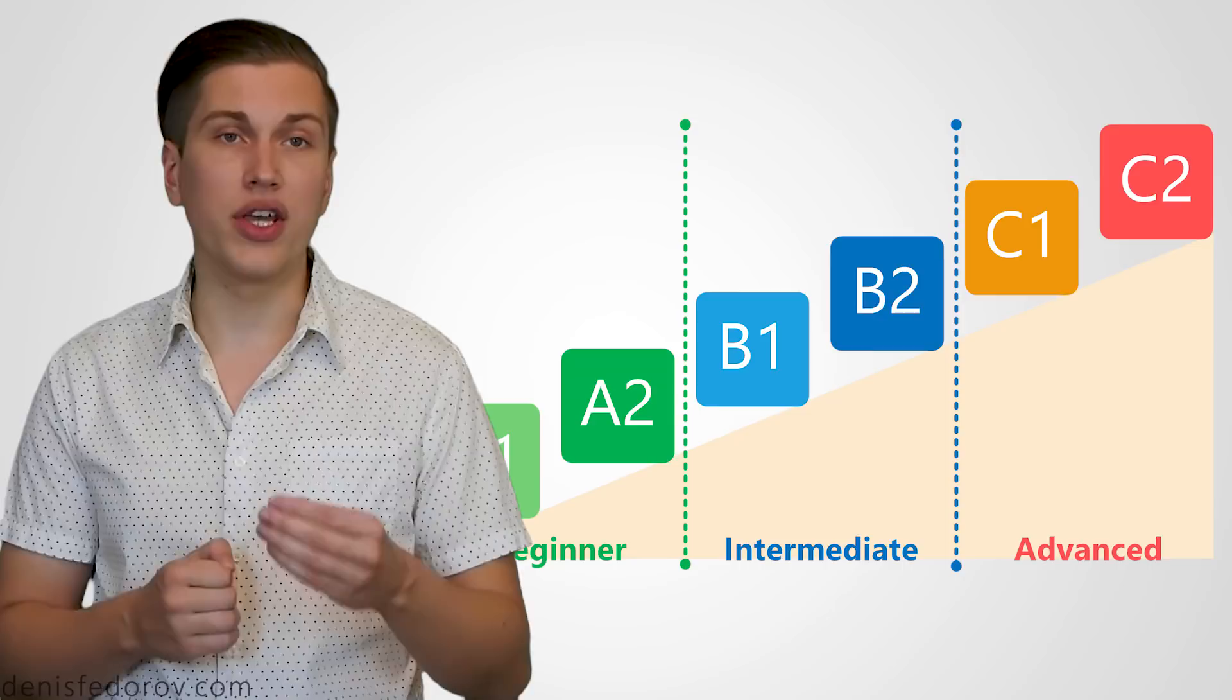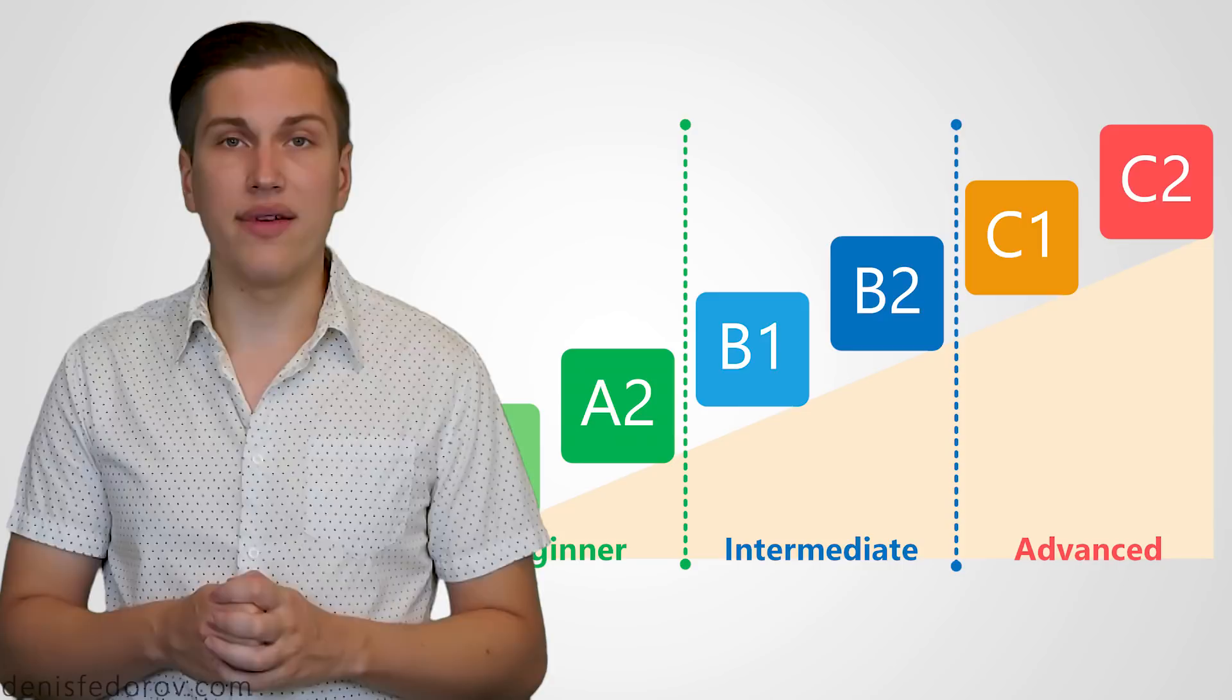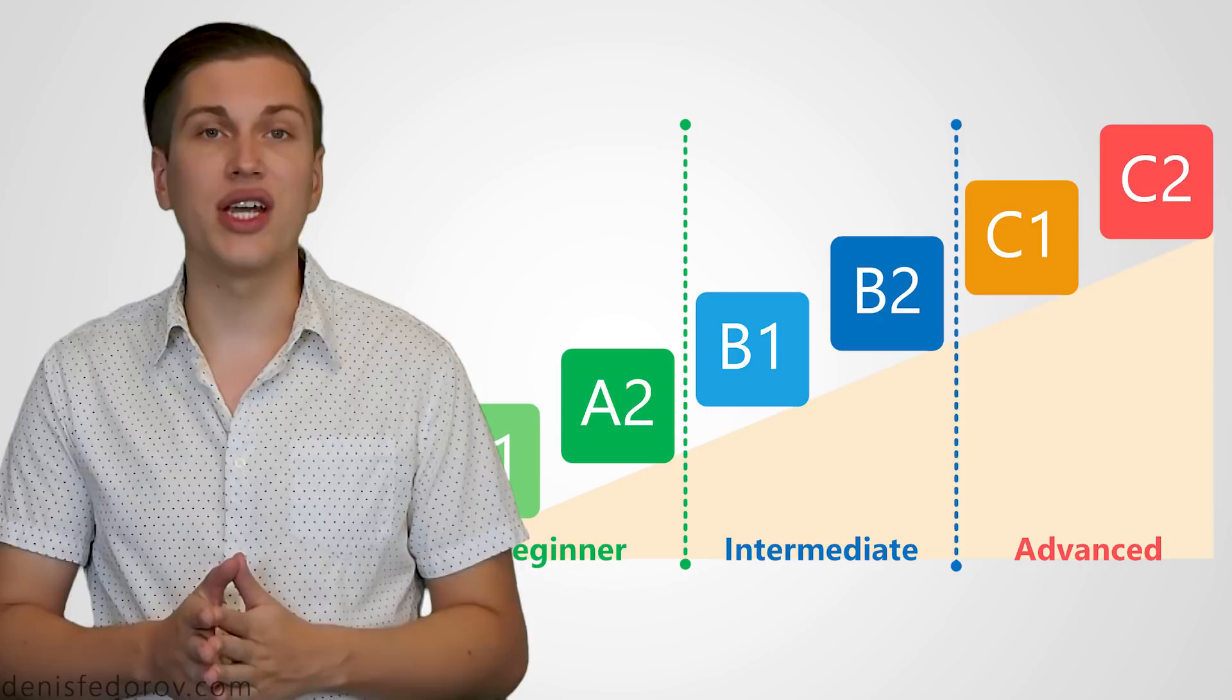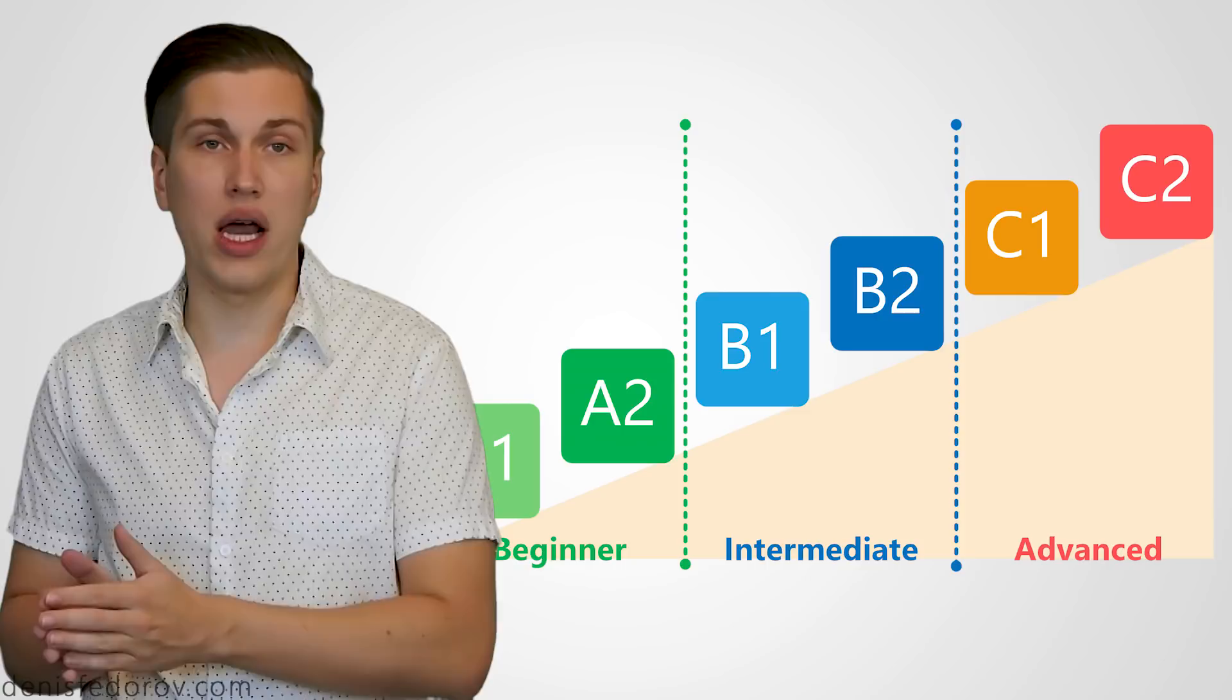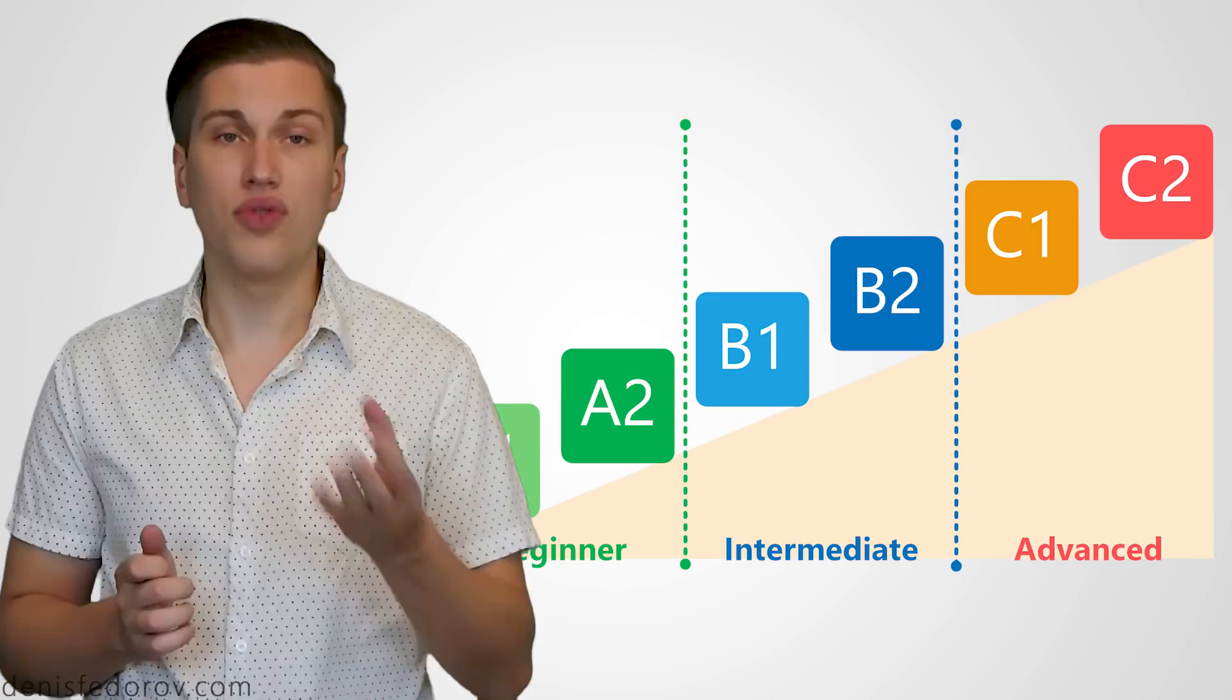C1 is a good level when even native speakers tell you that you know their language very good but for yourself you of course will know that you don't know their language as good as your mother tongue. That's why your realistic goal in learning Russian should be probably within the limits of B1 and C1. Of course you can set a goal to achieve a C2 level in Russian and nobody forbids you to do that.